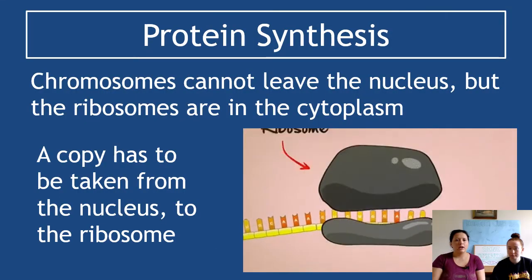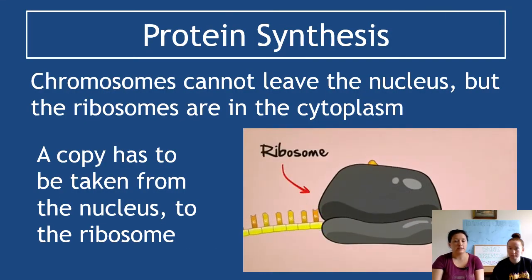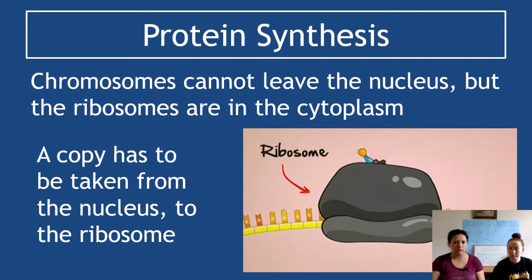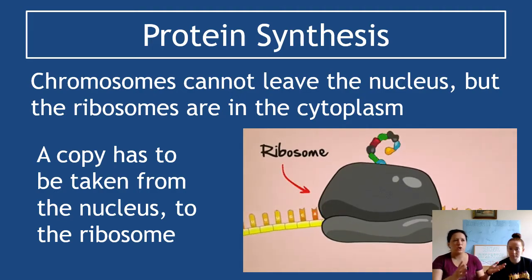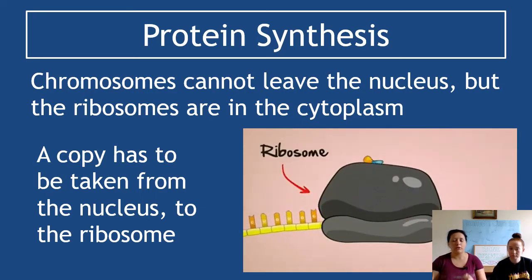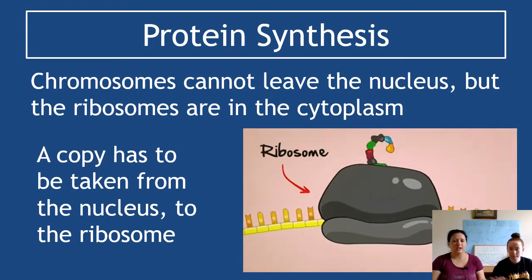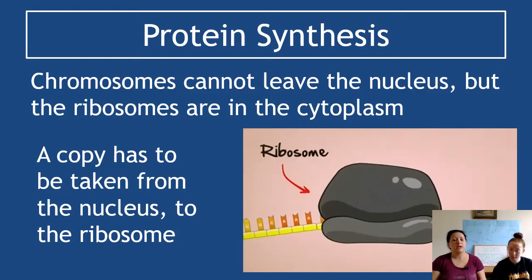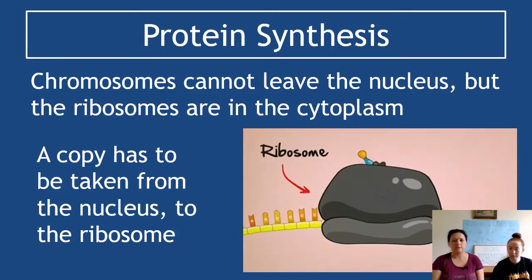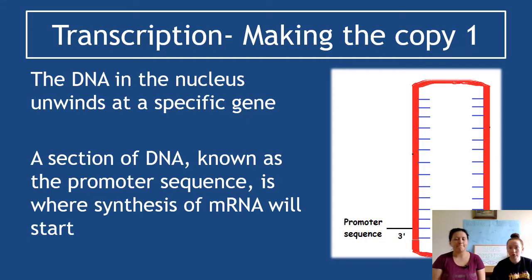Protein synthesis is essentially gene expression. Chromosomes are stuck in the nucleus, but ribosomes are in the cytoplasm. Chromosomes are where the code for building proteins lives, and ribosomes are where the protein is built. So we have a problem getting the DNA to the right place — a copy has to be taken from the nucleus to the ribosome.